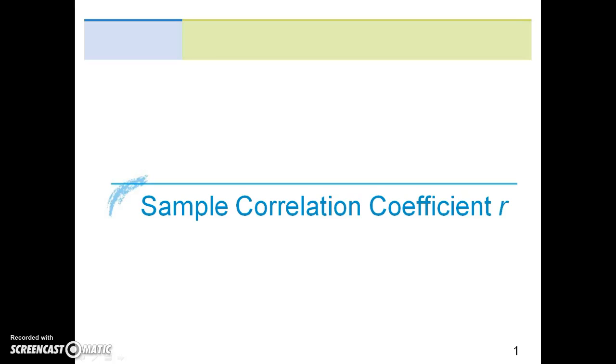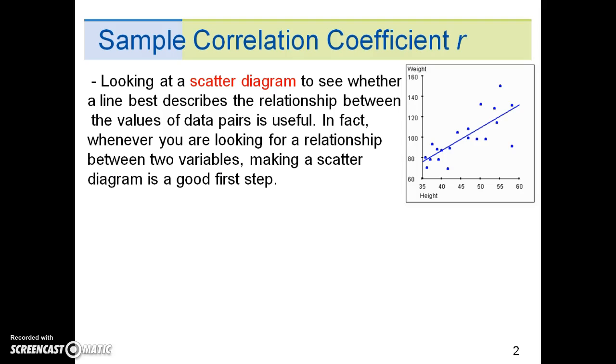This lecture will introduce the sample correlation coefficient denoted by the letter R. Looking at a scatter diagram to see whether a line best describes the relationship between the values of data pairs is useful. In fact, whenever you are looking for a relationship between two variables, making a scatter diagram is a good first step.